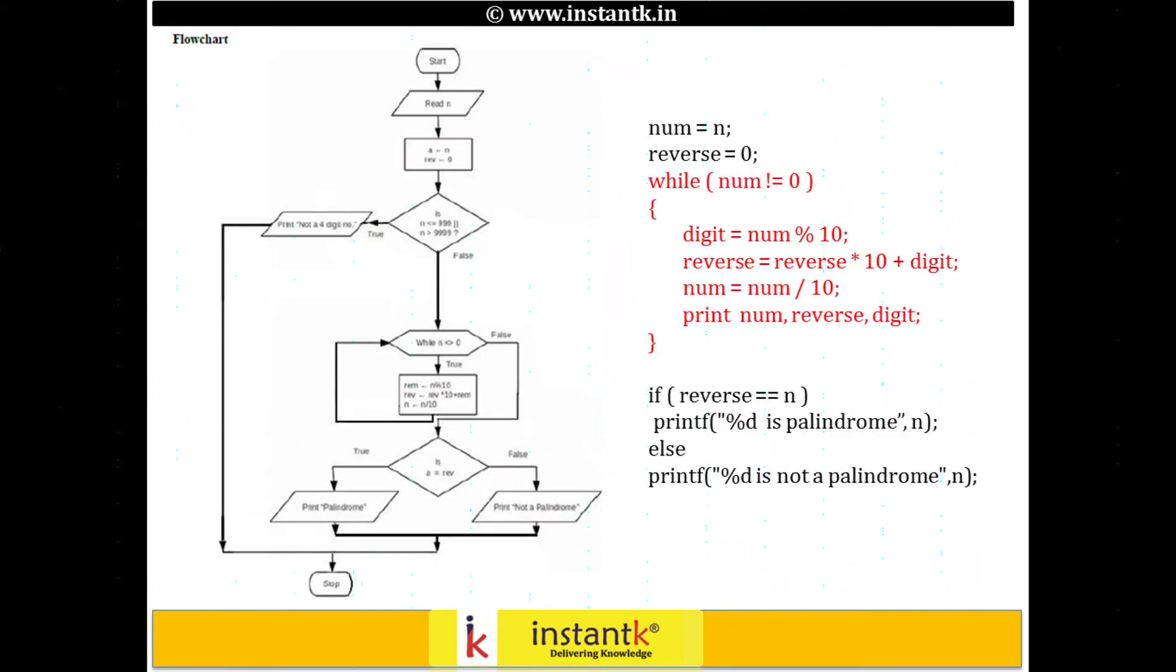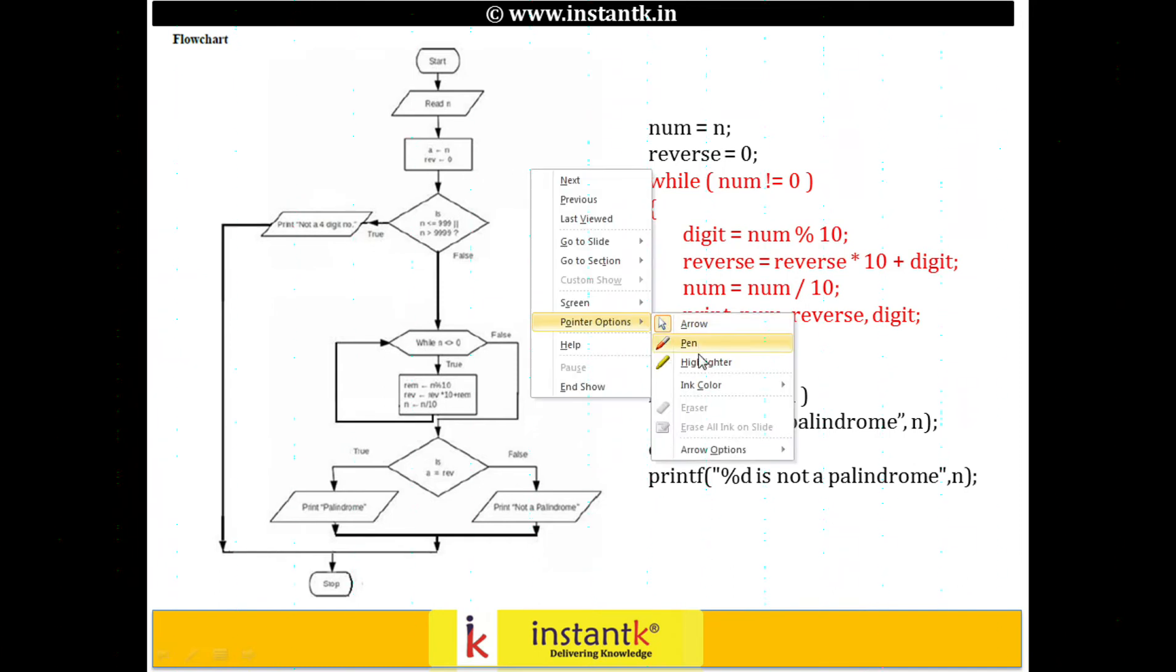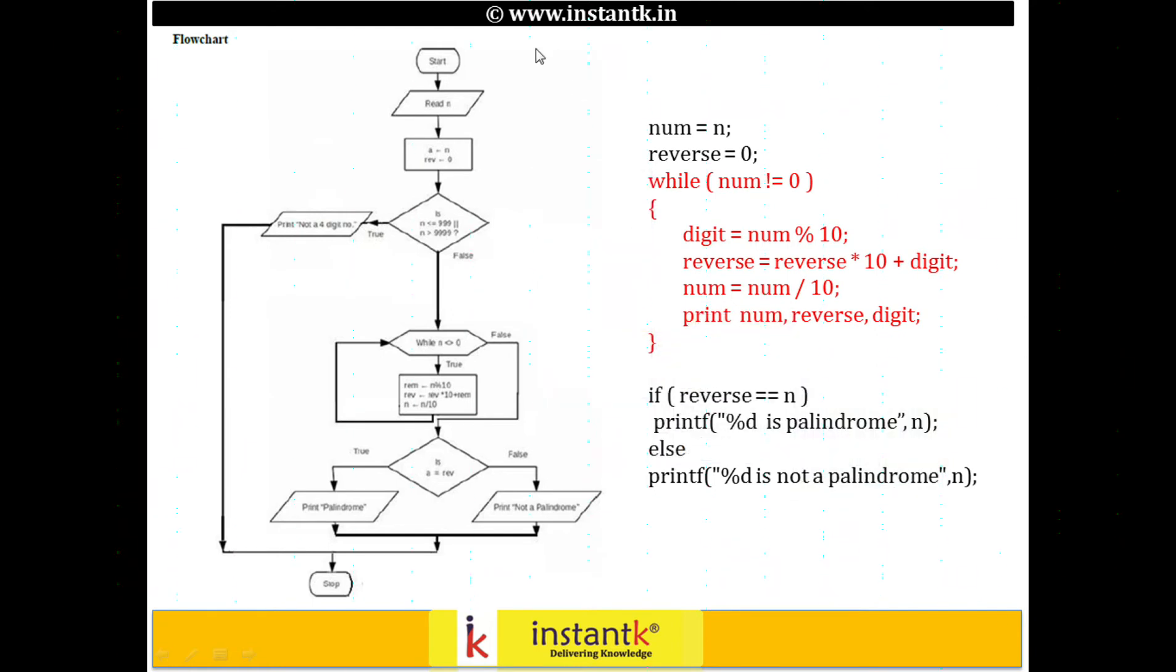This is a typical flowchart where you are going to read n, you are going to save n to a and reverse you initialize with 0. There is a condition whether it is going to be 3-digit or more than 4-digit. If it is false, it is going to go to the end and the whole thing is just this while loop - the 1, 2, 3, 4, 5 lines.